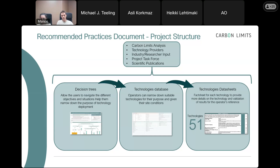Of course, when an operator gets 51 technology data sheets, that's a bit much — not all of them might be relevant. So we have this database alongside a filtering tool that allows operators to narrow down which technologies might be interesting for them, so they have just a few data sheets where information is summarized in a relatively standardized way to compare performance across different technologies.